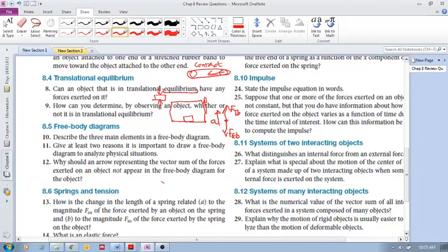Number 12. Why should an arrow representing the vector sum of the forces... What is the vector sum of the forces? It's the sum of all the forces. Remember, all this is saying, this is the vector, that's the bar over the F. Sum, that's the sigma, of all the forces. Sum of the forces is F1 plus F2, etc. You're summing up all the force vectors. So if we want to find out what is the vector sum of the forces here, we say this force plus this force, the vector sum of the forces.